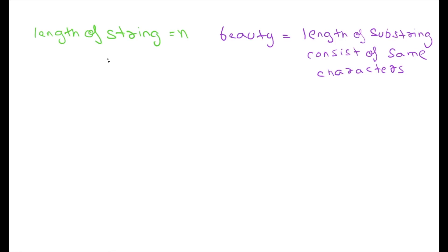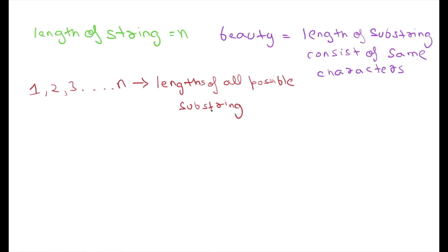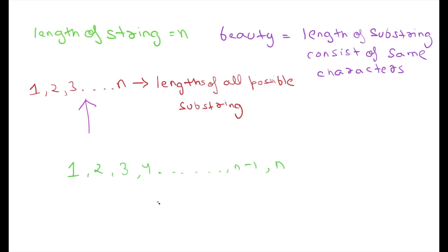There are many sub-strings of a string of length n, and the length of a sub-string is either 1, 2, 3, or up to n. These are the lengths of all possible sub-strings a string of length n can form, and beauty is also the length of a sub-string. So the maximum beauty is also present in these numbers, and our problem becomes: find the number among these which will be the maximum beauty of the string.